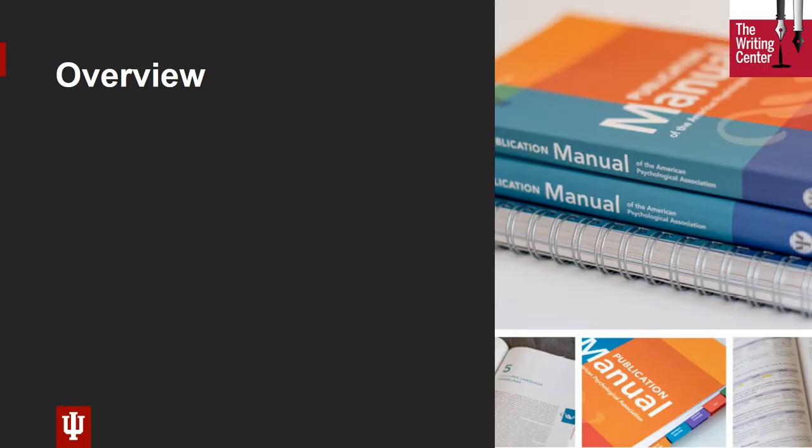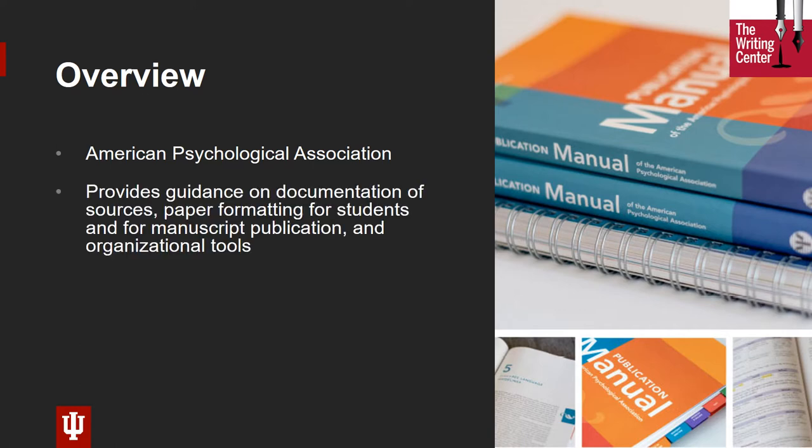APA is the official publication guide of the American Psychological Association. The manual provides guidance on how to document sources, including in the body of a paper, as well as on a references page at the end of the document. It also includes specific guidelines for how papers should be formatted, including organizational tools like section headings and appendices.